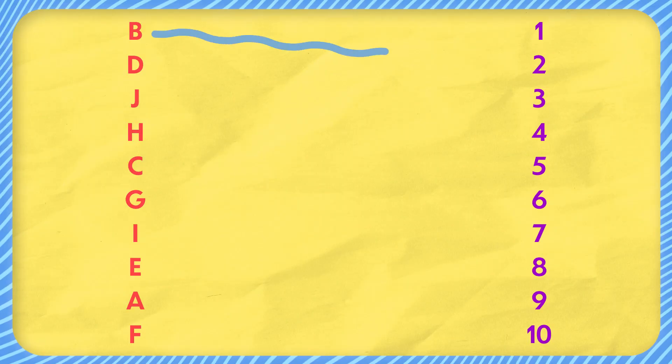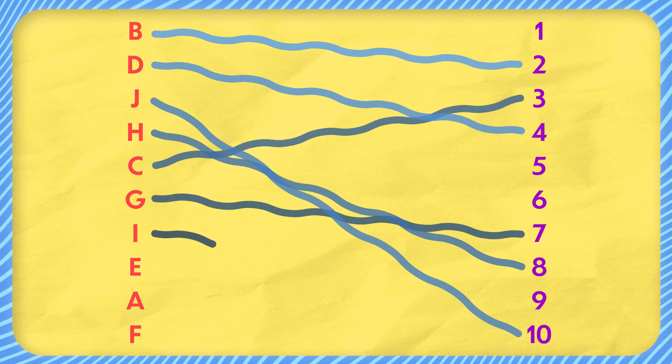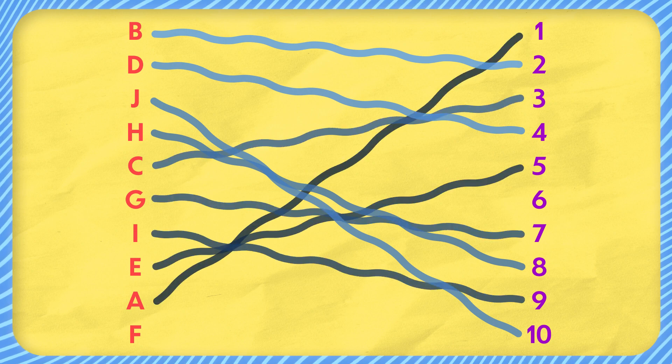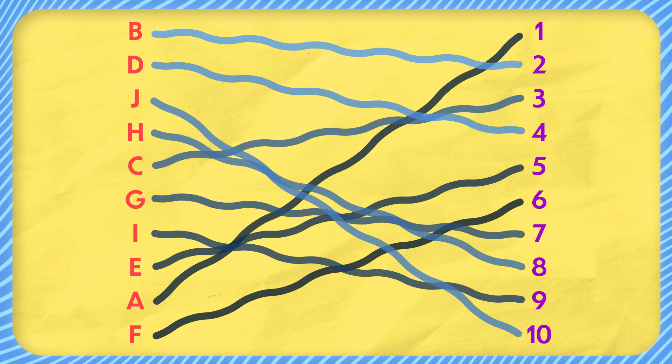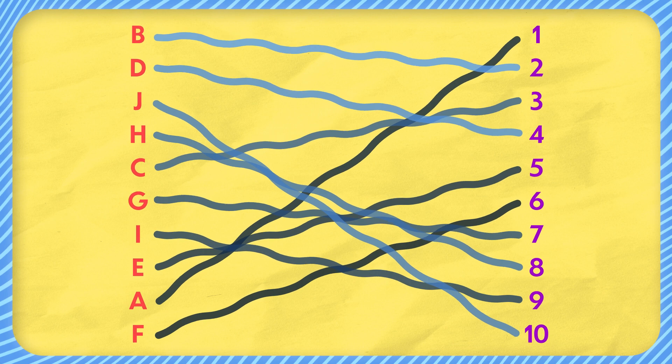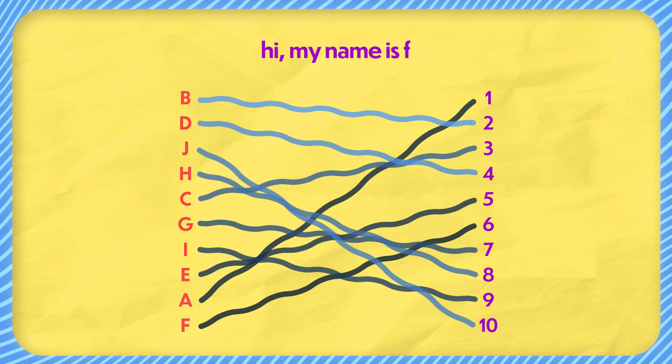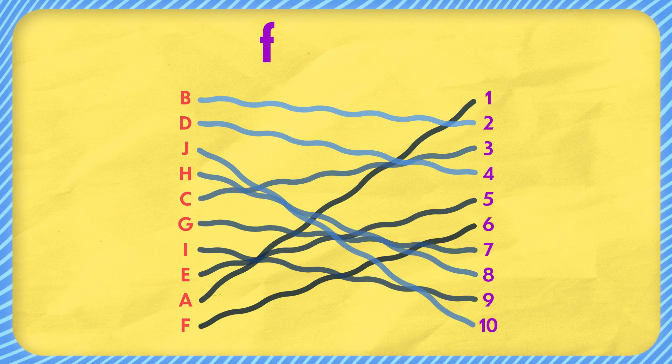A function, simply put, is just any connection we can describe between two sets. For example, we can connect this group of letters to the numbers 1 through 10, like this, where A connects to 1, B to 2, C to 3, on and on like that. We can describe these connections visually with the lines on the screen here. Now this group of connections as a whole is what we would call a function. In this particular function, I've decided to name F.